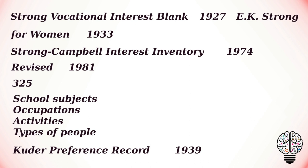The Kuder Preference Record contains 168 items, each of which lists three broad choices concerning occupational interests, from which the individual selects the one that is most preferred. The test is scored on 10 interest scales consisting of items having a high degree of correlation with each other. A typical score profile will have high and low scores on one or more of the scales and average scores on the rest.